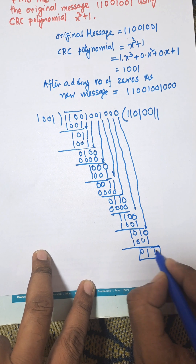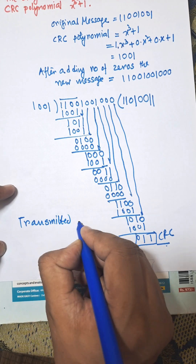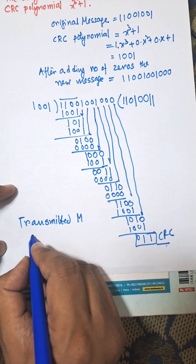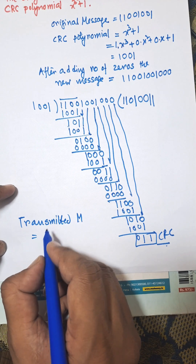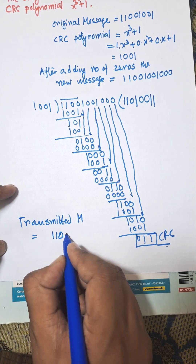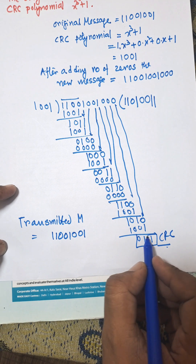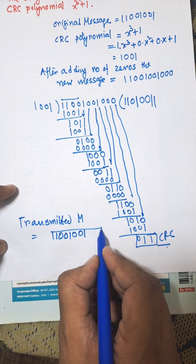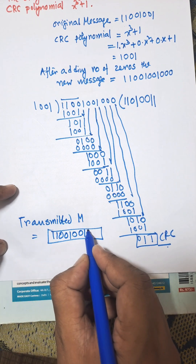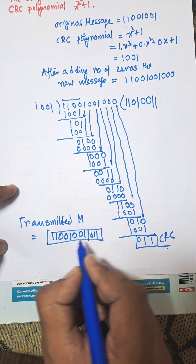The original message is 11001001 and we need to add the CRC bits, which are 011.